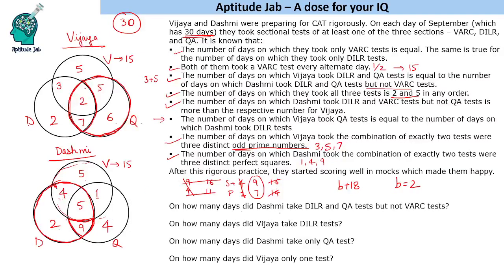Question 1: On how many days did Dashmi take DILR and QA but not VARC? That region is 9. Question 2: How many days did Vijaya take the DILR test? Adding up the DILR circle: 5 plus 9 equals 14. Question 3: On how many days was only the QA test taken? That is 4 days. Question 4: On how many days did Vijaya take only one test? That is 5 plus 2 plus 6, which equals 13.